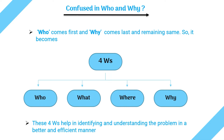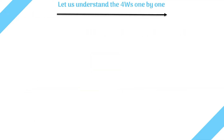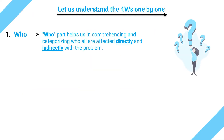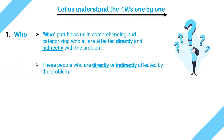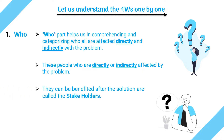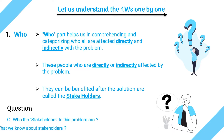The first W is 'who'. The who part helps us in comprehending and categorizing who all are directly or indirectly affected by the problem. People who are directly or indirectly affected by the problem and can be benefited after the solution are called stakeholders. In this block we find out who the stakeholders are and what we know about them.